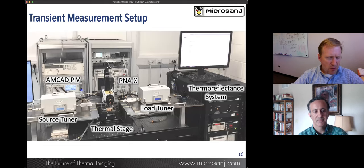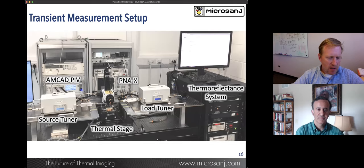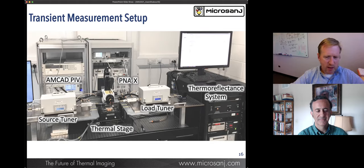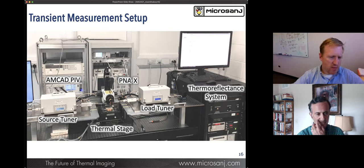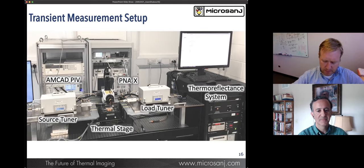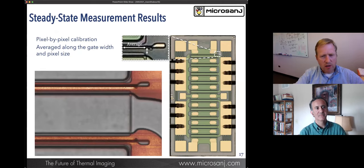An image of the full integrated system is here. You'll see the source and load tuners on either side of the image. The thermal stage of the Microsange system is right in the middle. That's all connected to an AMCAD pulse IV system so we can pulse on and off the device. The PNAX is behind the microscope above the thermal stage, and the rest of the electronics for the thermal reflectance system are on the right hand side. This whole system allows us to do the measurements we're going to show here in just a moment.